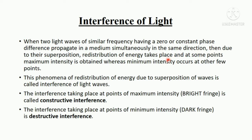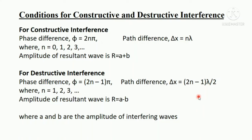As a result at some places maximum intensity or bright fringe is formed which is due to constructive interference whereas, at some other places minimum intensity or dark fringes form which is due to the destructive interference. The phenomena of redistribution of energy due to superposition of waves is called interference of light waves.